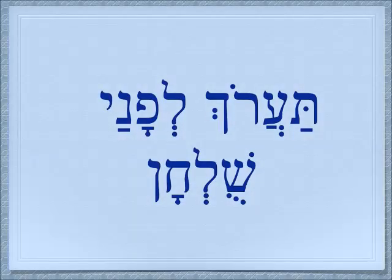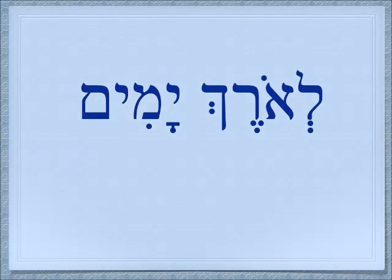We saw the phrase Te'aruch lefanai shulchan, which means 'you will prepare before me a table.' And at the end we saw the phrase Le'orech yamim, meaning 'for the length of days.' Now the two words are spelled differently — one with an ayin and one with an aleph — and we have seen that this has caused homonyms to occur before.